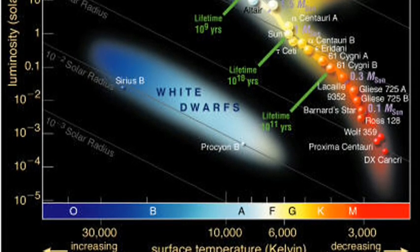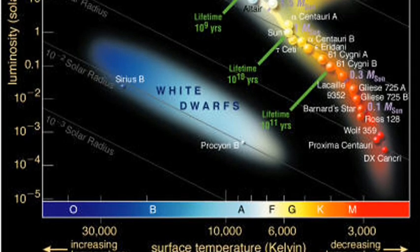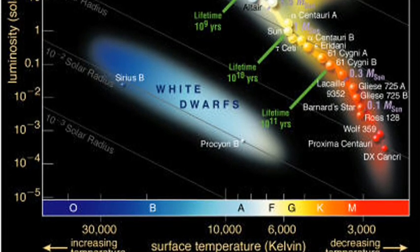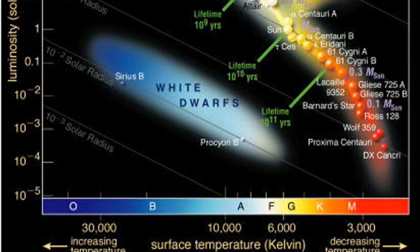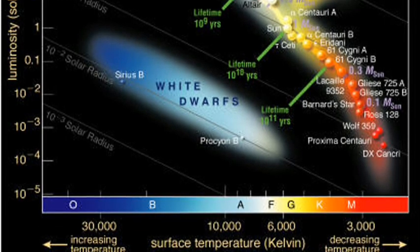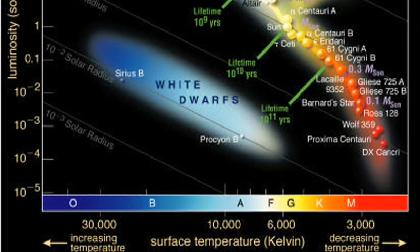White dwarves are the leftover centers of old stars and they are near the end of their lives. The leftover centers of stars are small and very hot. According to astronomers, the sun will eventually become a white dwarf.